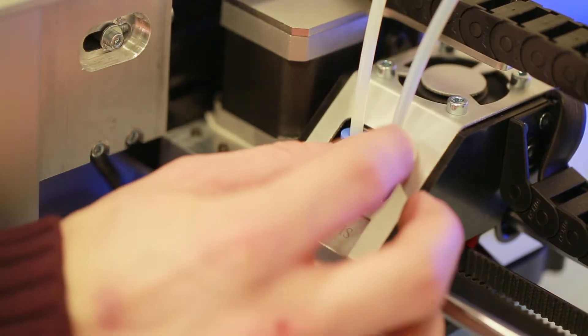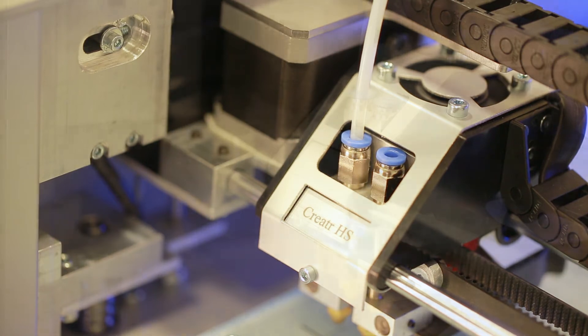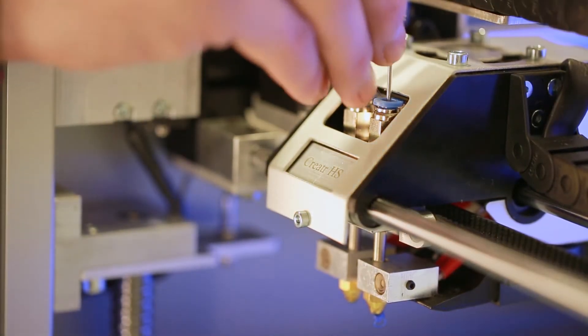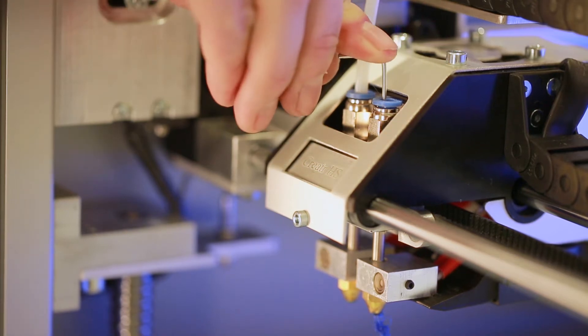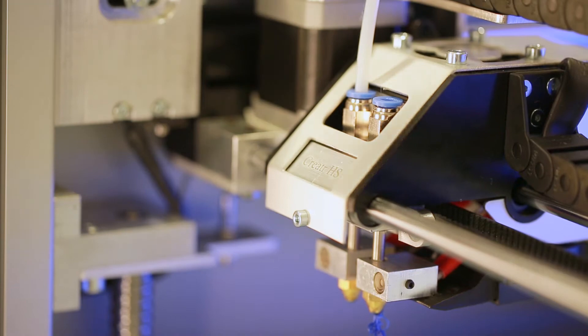Remove the bowden tube from the push-in coupling on the printhead. Use a 1.5 mm thick metal tool to push filament through the nozzle. If this does not succeed in unclogging the nozzle, we need to replace it.